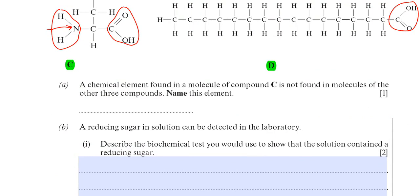The examiner wouldn't accept just 'N', and is unlikely to accept N2, which is the chemical symbol for nitrogen. It's best to do what the question says — it's not asking for the chemical symbol, it's asking you to name it, and that name is nitrogen.